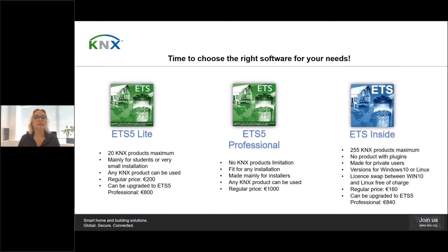The ETS Inside license is made for private users. You can configure one project with a maximum of 255 products, but be aware that this license is not compatible with products that have plugins. It is especially interesting for installations where you start from zero, where you can still choose devices from its own online product catalog. This version exists for Windows 10 and Linux, and you can swap the license between Windows 10 and Linux if you made the wrong choice. The regular price is 160 euros and it can be upgraded to ETS 5 Professional for 840 euros.